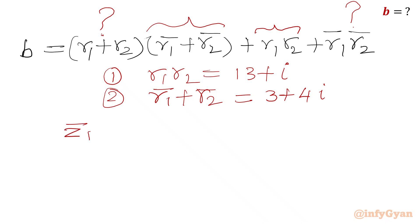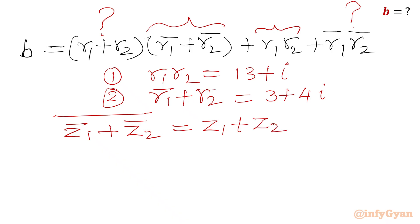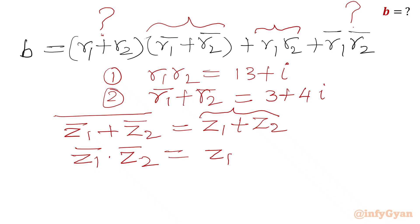The two complex number properties we will use are: first, the conjugate of a sum — (z1_bar + z2_bar) conjugated equals z1 + z2; and second, the conjugate of a product — (z1_bar · z2_bar) conjugated equals z1·z2. We use these two properties to find r1 + r2 and r1_bar·r2_bar.